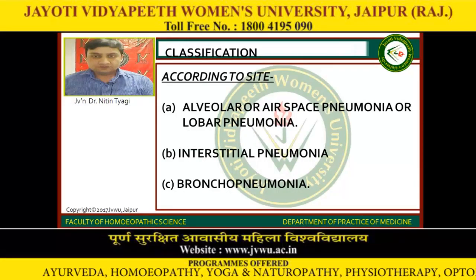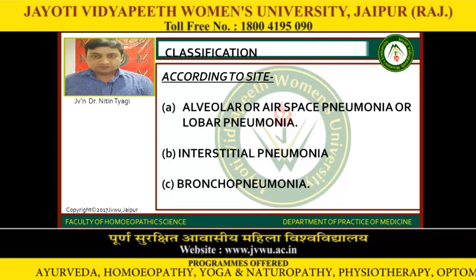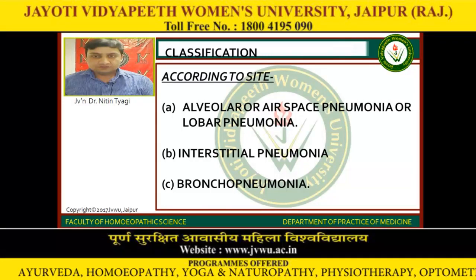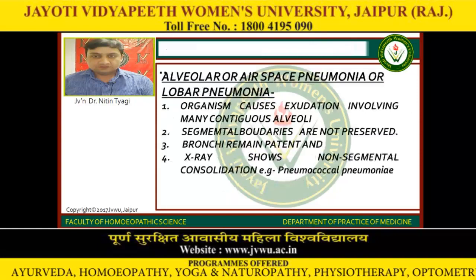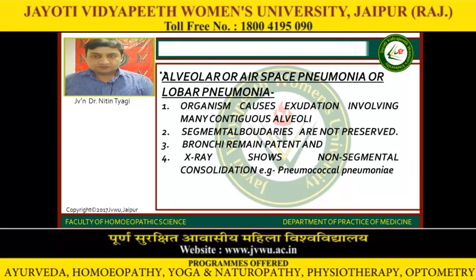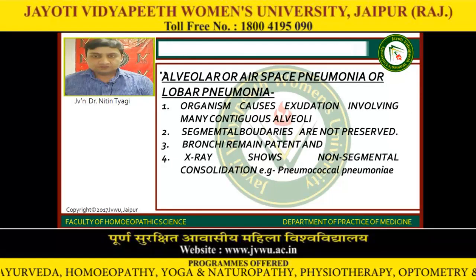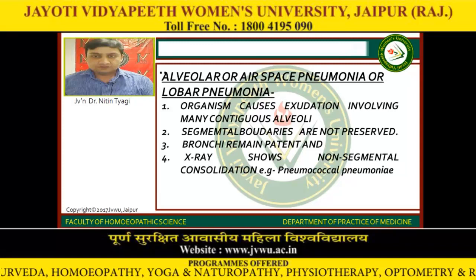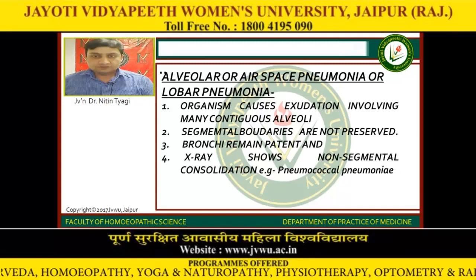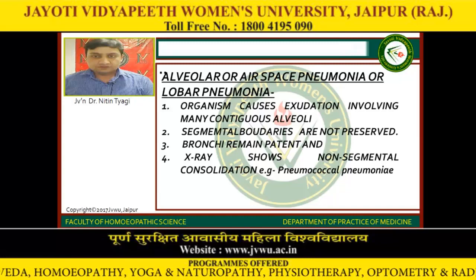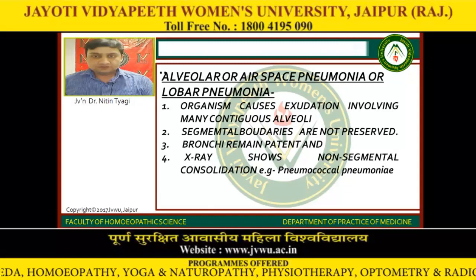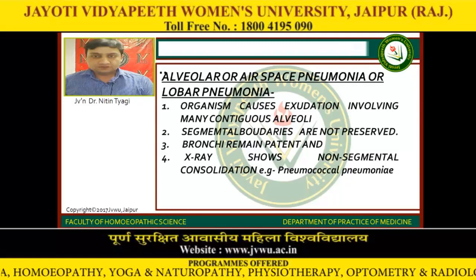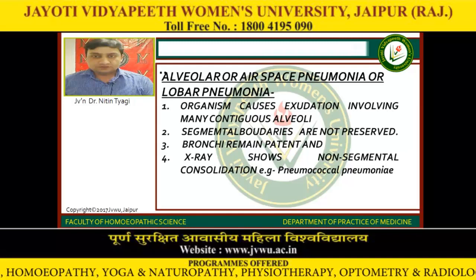Classification. According to site, pneumonia is classified into alveolar or airspace pneumonia or lobar pneumonia, interstitial pneumonia, and bronchopneumonia. Alveolar or airspace pneumonia: the organism causes exudation involving many contiguous alveoli. The segmental boundaries are not preserved. The bronchi remain patent and the X-ray shows non-segmental consolidation. Example: Pneumococcal pneumonia.